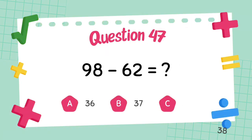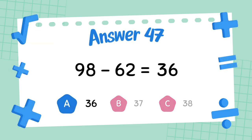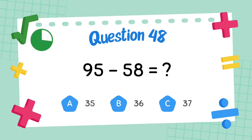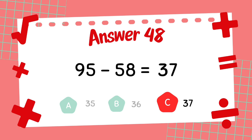What is 95 minus 58? The answer is 36. What is 95 minus 58? The answer is 37.